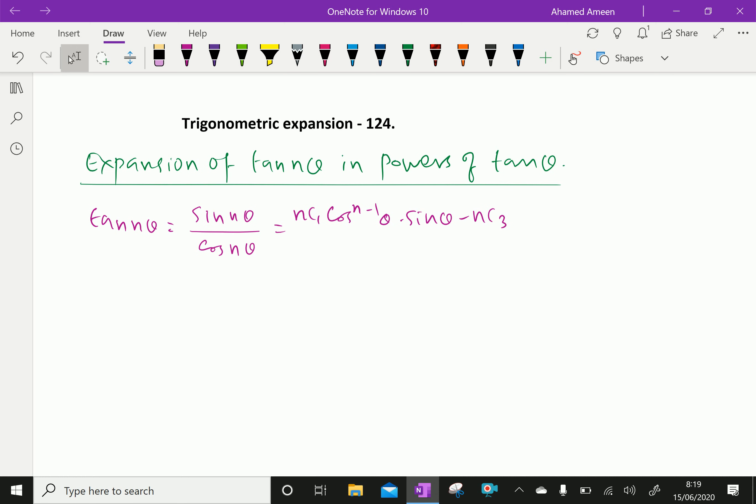Nc3 means n into n minus 1, n minus 2 by 3 factorial. Like Nc3 cos power n minus 3 theta into sin cube theta, and the terms go on increasing.